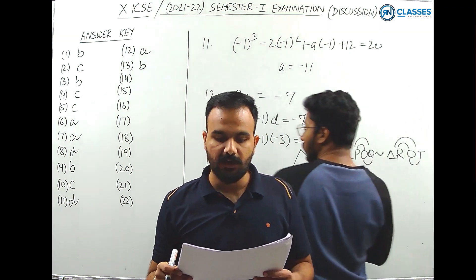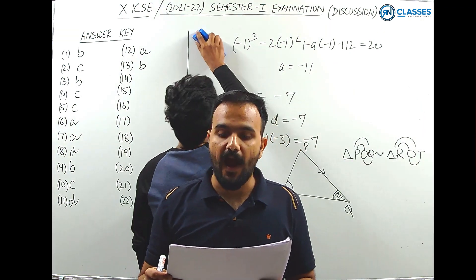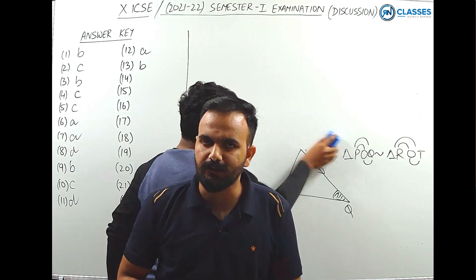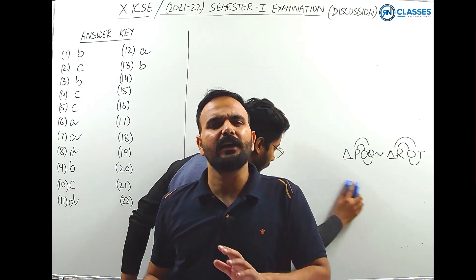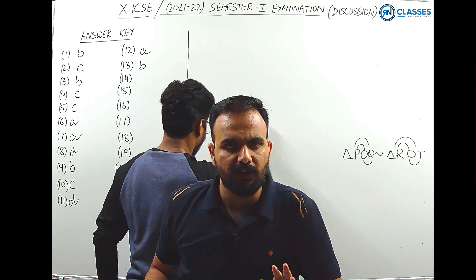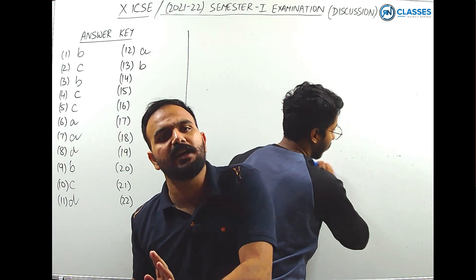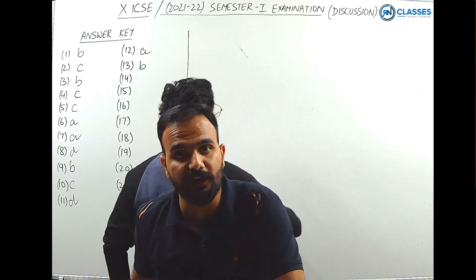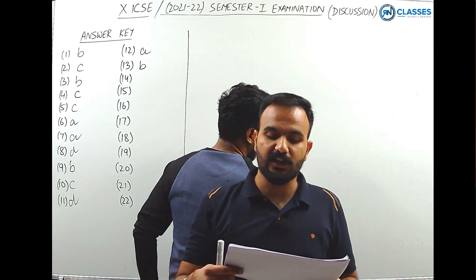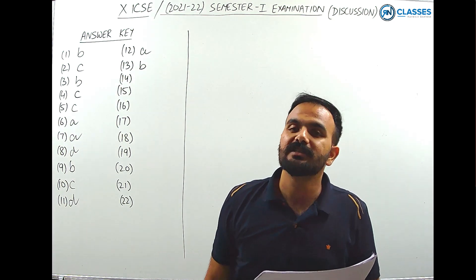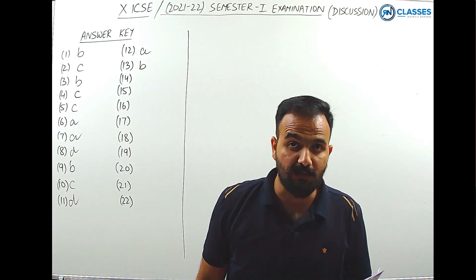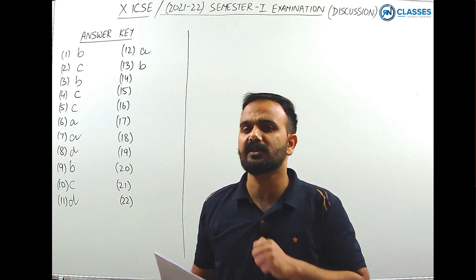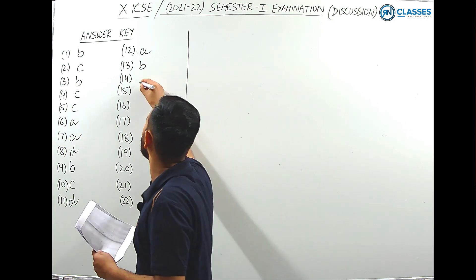Question 14: if A, B, C, D are proportional, then (A+B)/(A-B) equals — using the componendo and dividendo property, since A/B = C/D, applying componendo-dividendo to the right side gives (C+D)/(C-D). Option D is the correct answer for question 14.